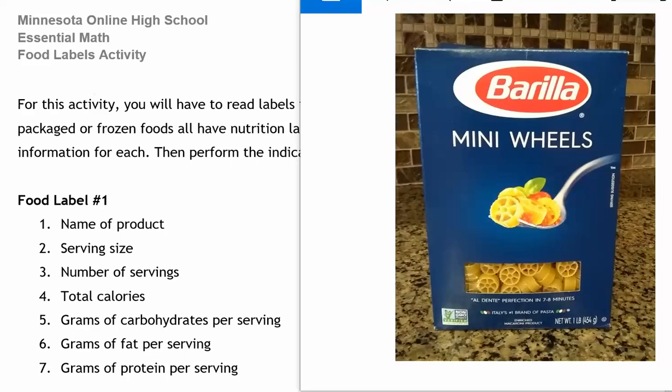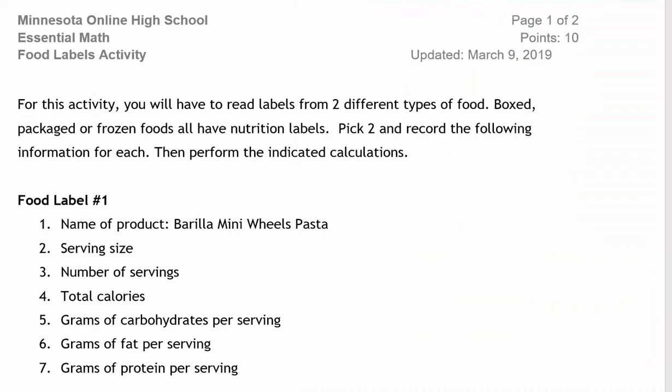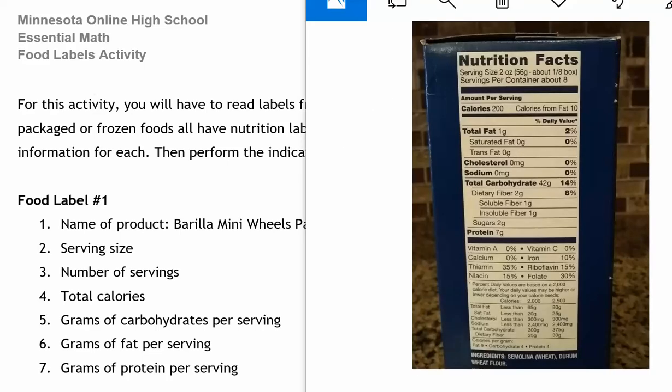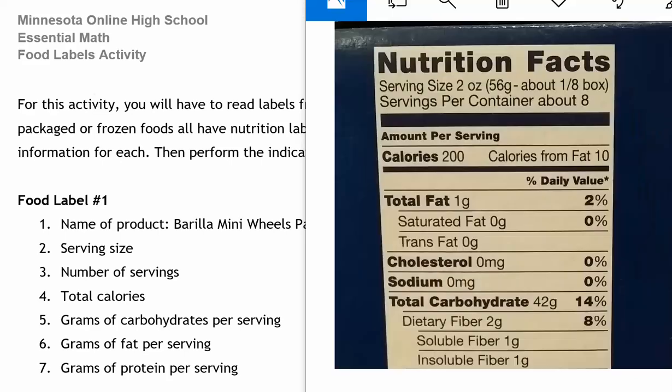I looked in my cupboard and one thing I found was a package of pasta. So this is Barilla Mini Wheels Pasta. I'm going to start by writing that as my name of product. For the rest of the information, I'm going to need to turn the box to the side to look at the nutrition label. So the nutrition label is usually on the side or the back of your package. Now we're going to read information from the package and just fill it in.